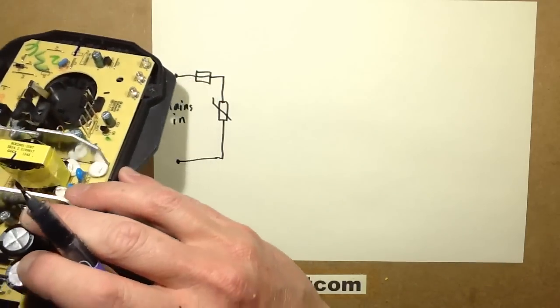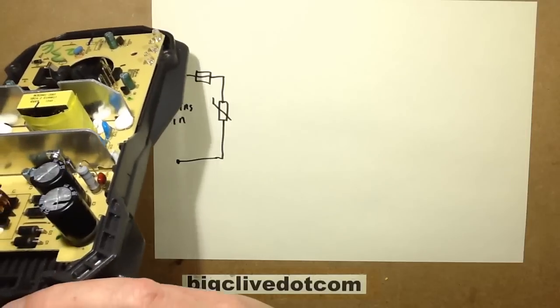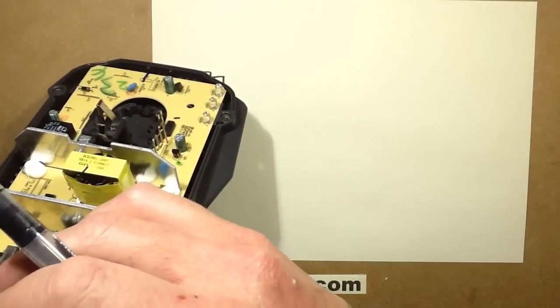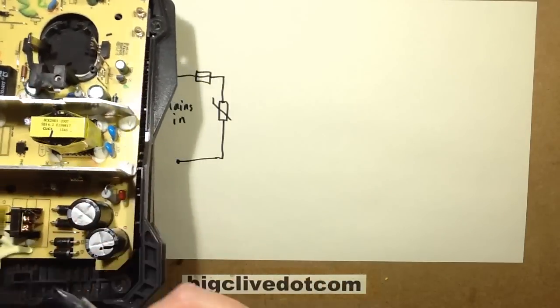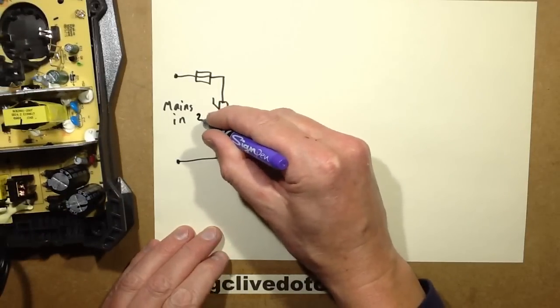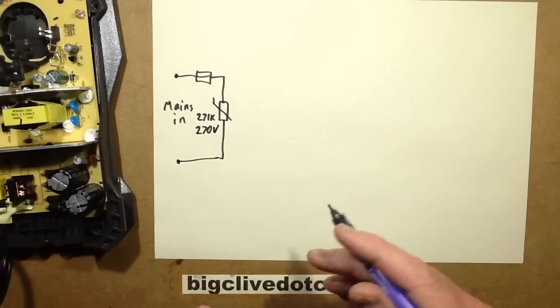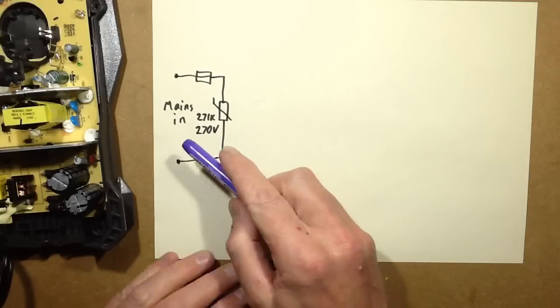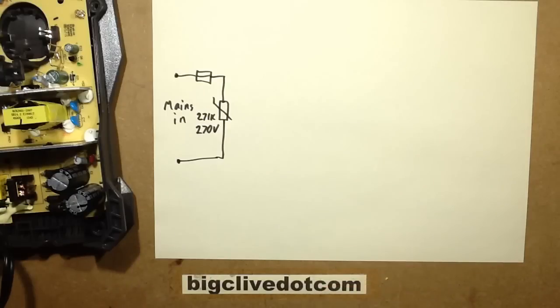This one is, unfortunately, the number on it is ZOV10D271K. So that 271K is the important bit here. 271K means it's actually 270 volts. You think, well it's a 240 volt supply, is that a problem? Well yes it is, because that's the actual voltage it will start turning on before it starts clamping.